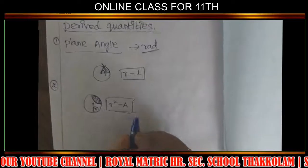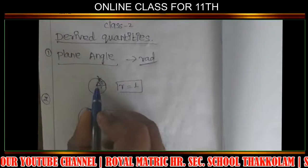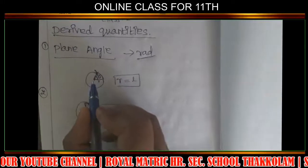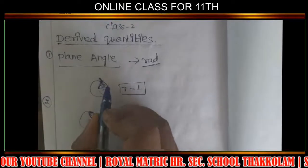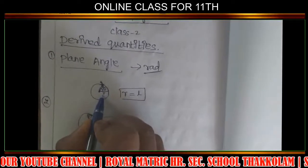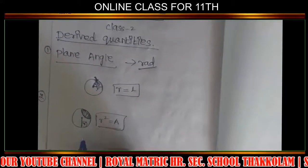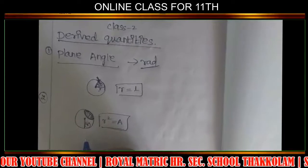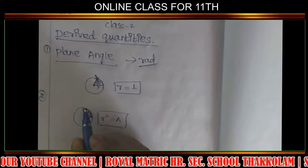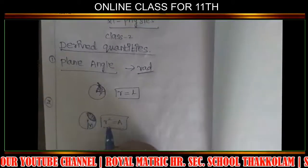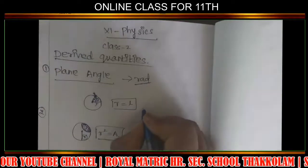We have definitions. One Radian is the angle subtended at the center of a circle by an arc equal in length to the radius of the circle. Next is Steradian. One Steradian is the solid angle subtended at the center of the sphere by that surface of the sphere which is equal in area to the square of the radius of the sphere.